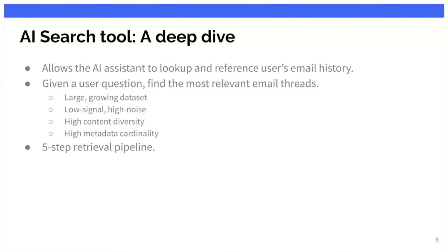For "summarize this" the AI correctly selects the current thread tool. For "reply like I've done in the past" it's more complicated — it needs to first look at the thread the user is currently looking at, use AI search to pull up past emails, and then use compose to write a reply. This all happens under the hood, out of the view of the user, but deep within our stack. So let's talk about the AI search tool — our most sophisticated tool.